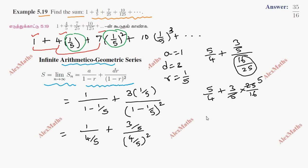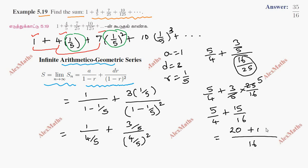So we get 5 by 4 plus 3 by 5 into 25 by 16. Cancelling gives 5 times, so 15 by 16. Therefore 5 by 4 plus 15 by 16. Taking LCM which is 16, we get 20 plus 15. The total answer is 35 by 16.